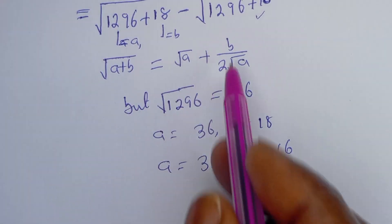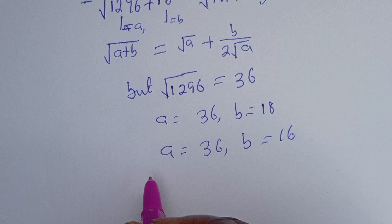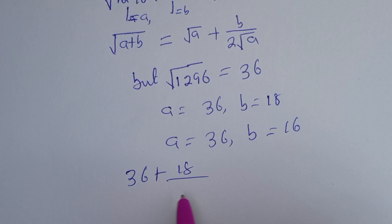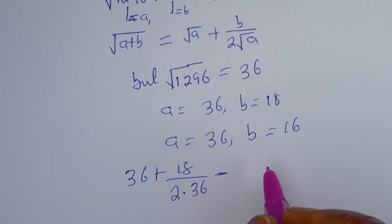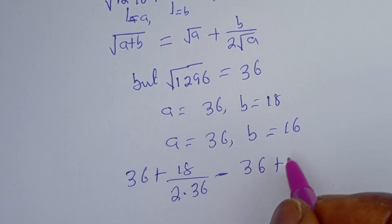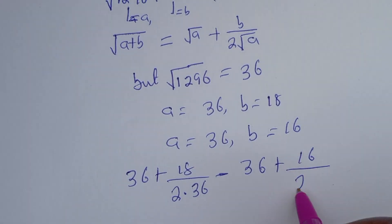Now let's substitute into this equation. We have 36 plus 18 over 2 multiplied by 36, minus 36 plus 16 over 2 multiplied by 36.